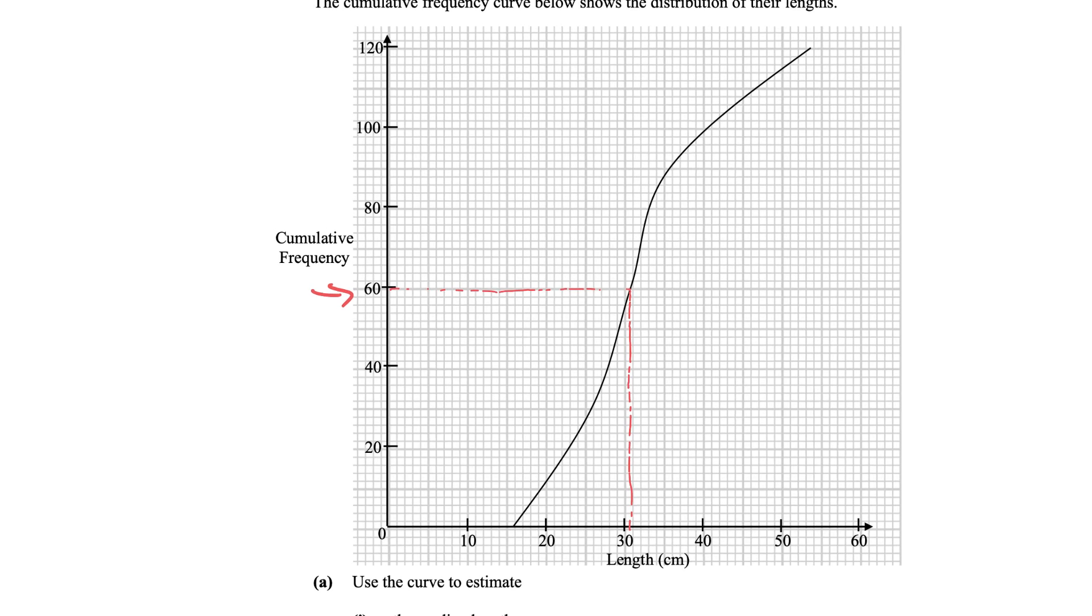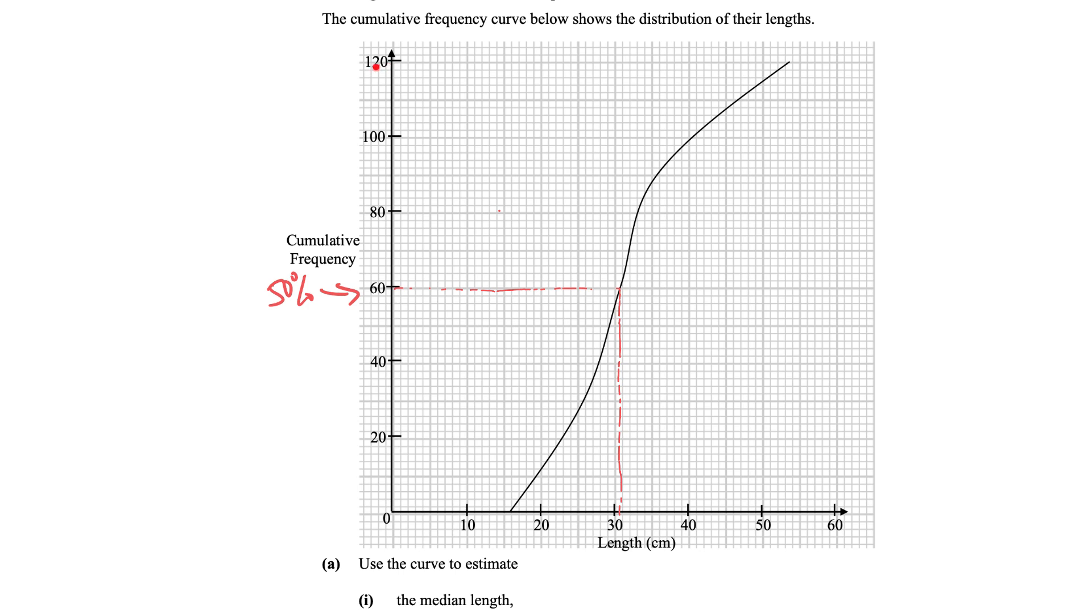At the 60th mark, it's our 50th percentile. It splits all 120 data points, it splits into two, right? And the middle point here will be my lower quartile and the middle point here will be my upper quartile.